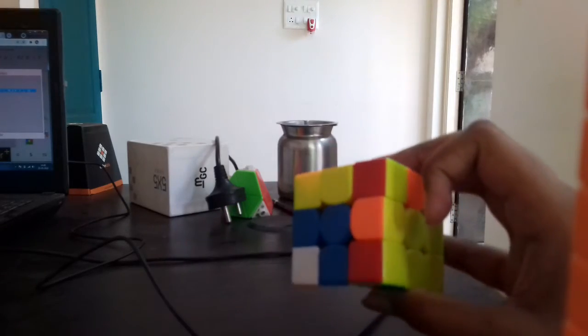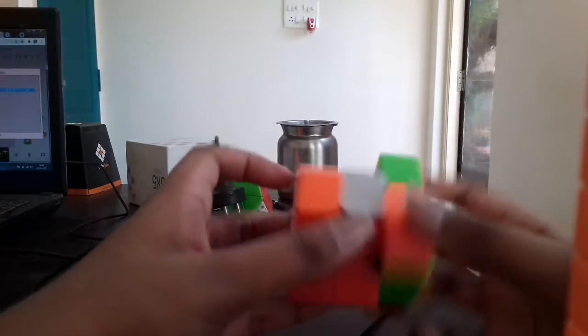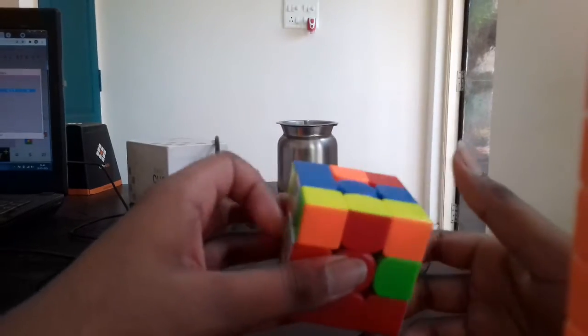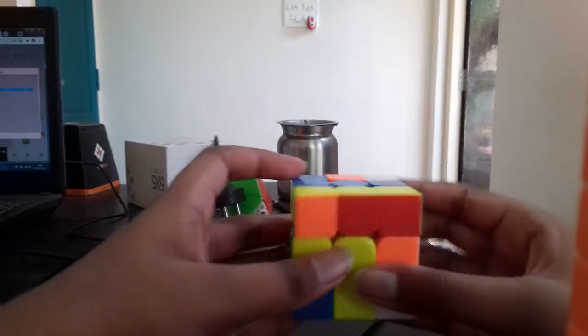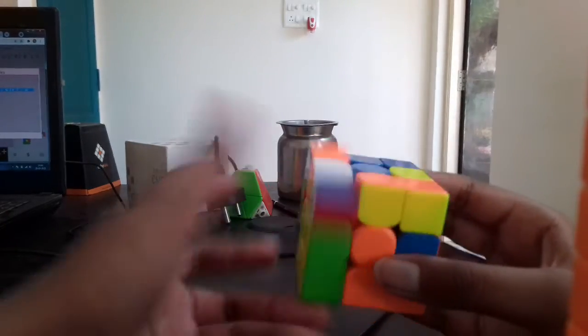My second pair was these two, but I just inserted them the normal way. Insert the corner and then the edge. And rotate, and somehow that also inserted this pair. Then rotate and insert.